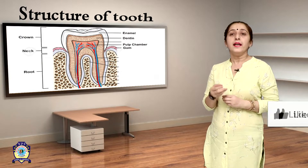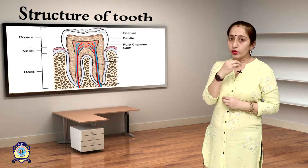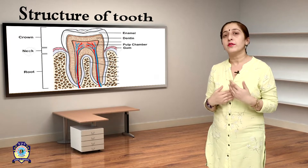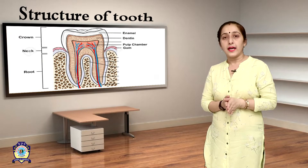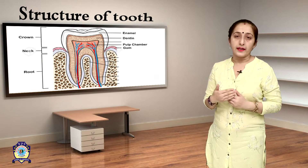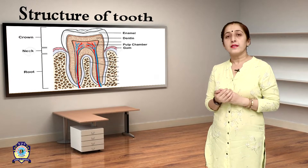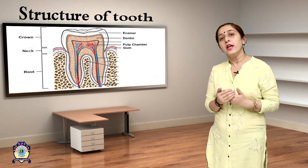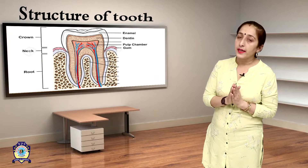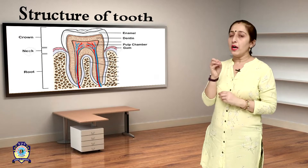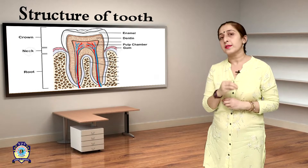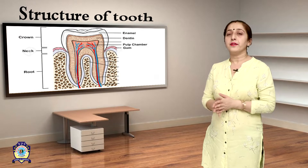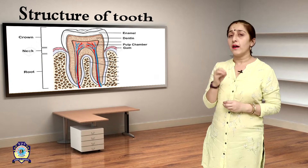Dentine protects the inner part of the tooth which is called the pulp. Below the dentine, there is a pulp cavity which consists of blood vessels and nerves. The teeth are the hardest substance in our body, and they help us to tear and chew.